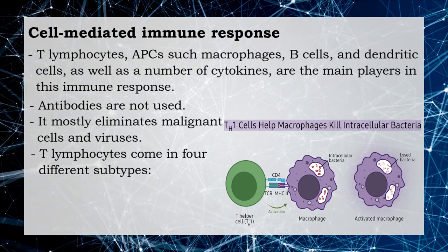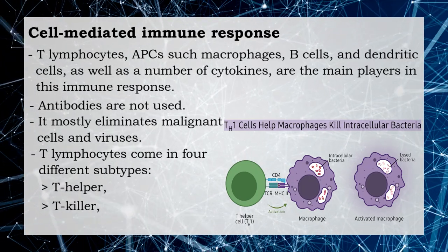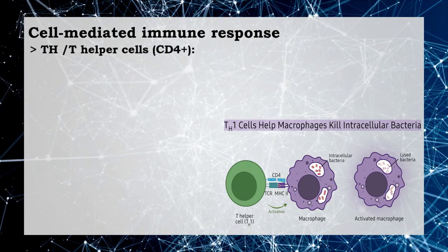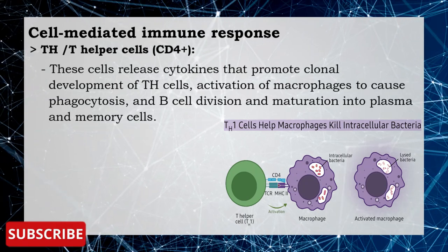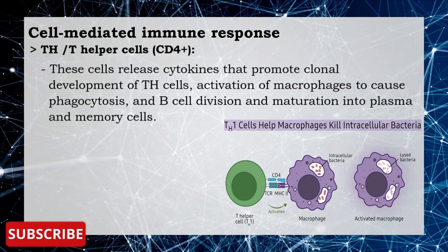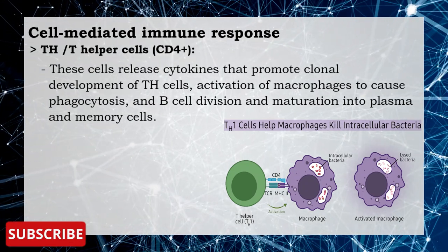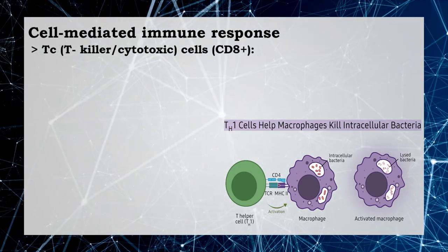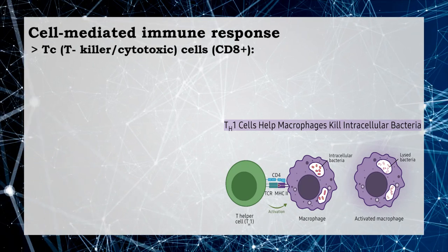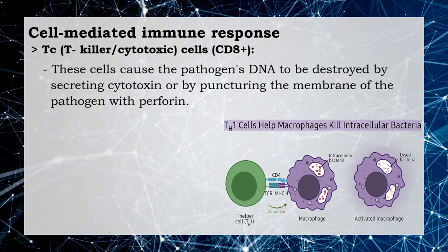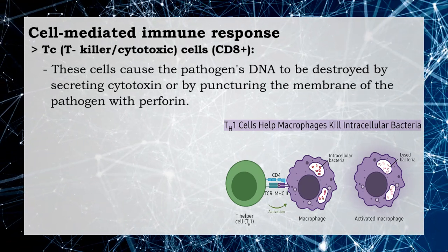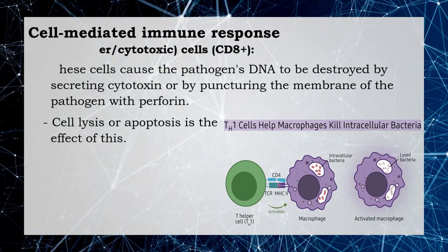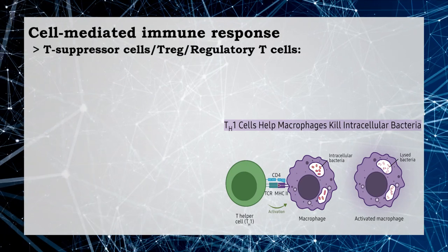T lymphocytes come in four different subtypes: T helper cells, T killer cells, T suppressor cells, and T memory cells. T helper cells (CD4+ T cells) release cytokines that promote clonal development of T helper cells, activation of macrophages to cause phagocytosis, and B cell division and maturation into plasma and memory cells. T killer cells or cytotoxic cells (CD8+ T cells) cause the pathogen's DNA to be destroyed by secreting cytotoxins or by puncturing the membrane of pathogens with perforin; lysis or apoptosis is the effect of this.